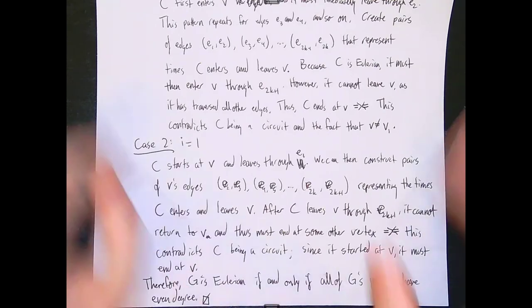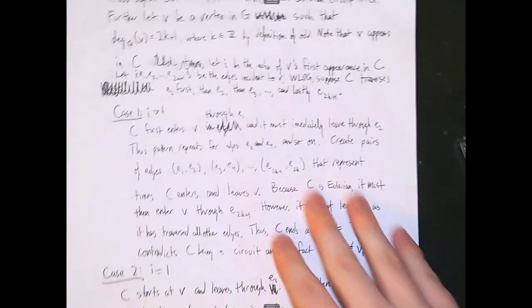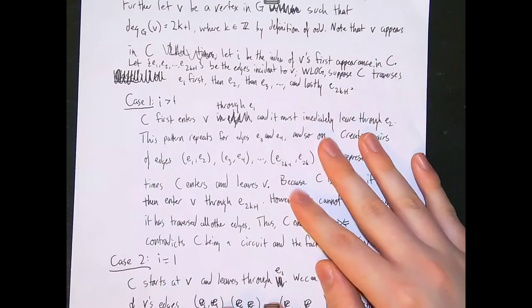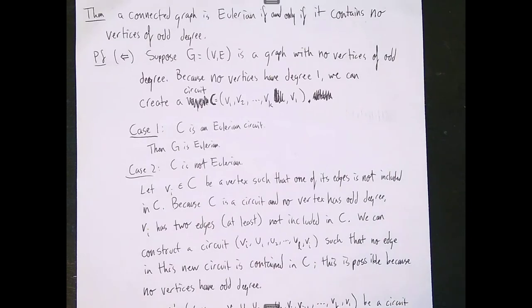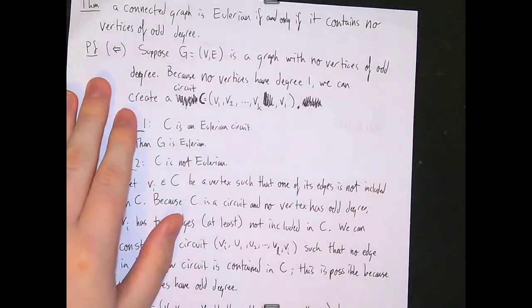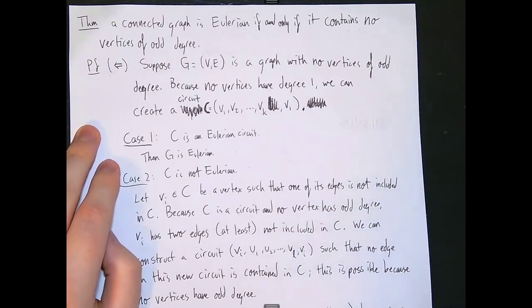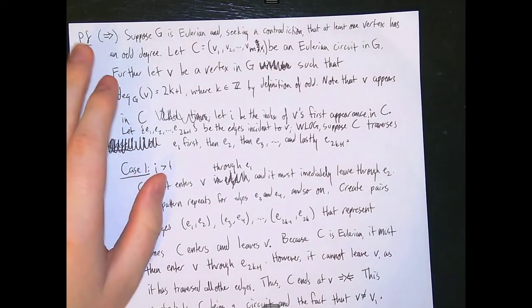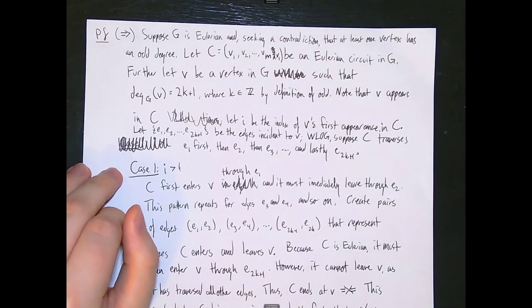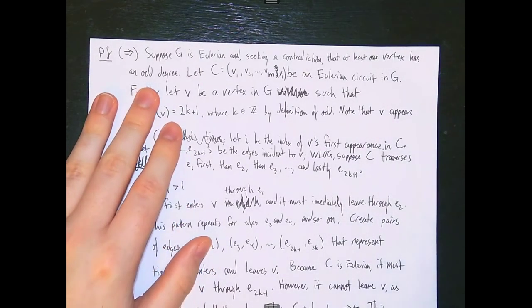Something notable about this proof: it's the first proof I've shown where you can't show just one side and say the other follows by symmetry. I used vastly different logic for each direction — so we can't do a symmetric argument here. This is also a very high-level graph theoretical proof. It's actually relatively rare to see direct proofs used in graph theory — most advanced proofs use contradiction, like here: suppose the graph doesn't have this property, then what? If you continue studying graph theory, you'll see a lot more proofs by contradiction.